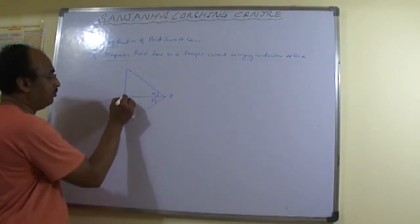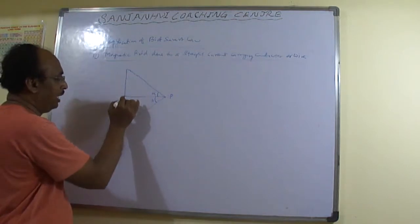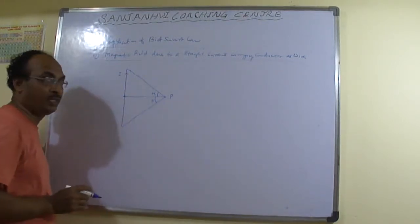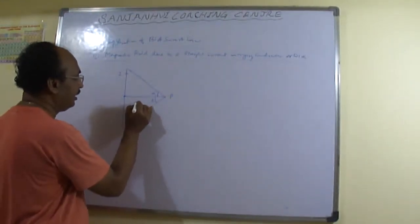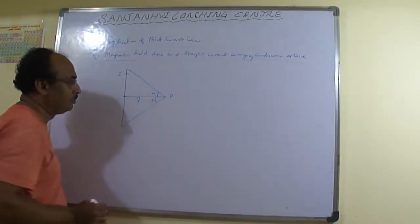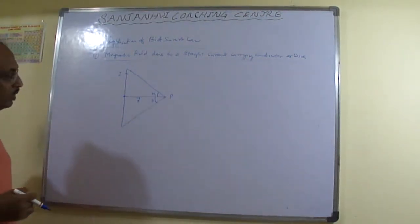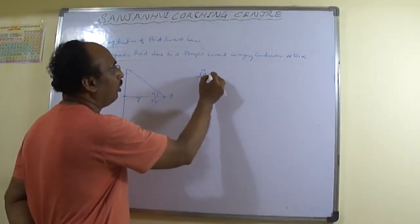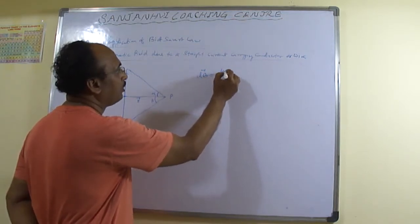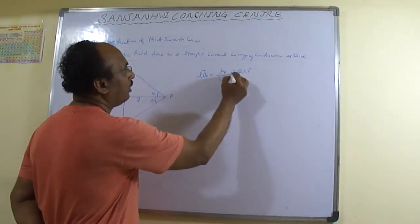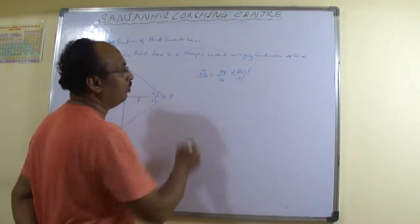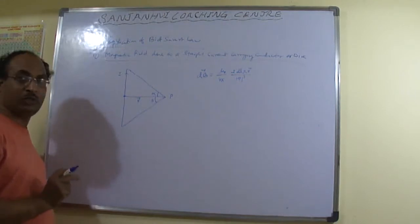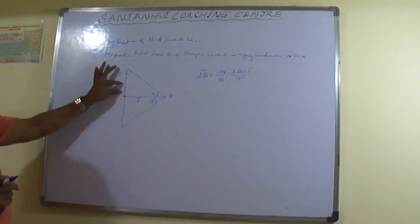Take this point as the origin. The y-direction is positive upward and negative downward. This element is carrying a current I. This is the position vector R at point B.